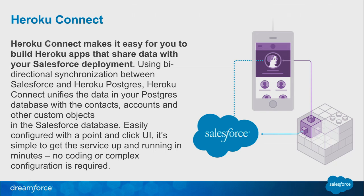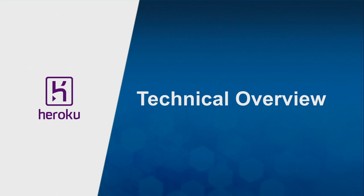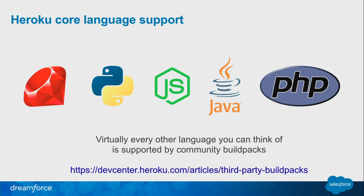So that's the 100,000-foot overview. Let's drop to the 10,000-foot view. Heroku is language agnostic — we don't care what language you use. You can use whatever language you're already familiar with. We have core support for Ruby, Python, JavaScript/Node.js, Java, and PHP. But basically any other language can be supported through a feature called build packs, which specify the runtime your application runs under. So if your favorite language isn't listed, chances are someone has already built support for it, and if they haven't, you can do it yourself — it's a fairly simple API.